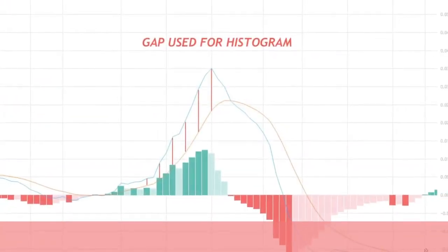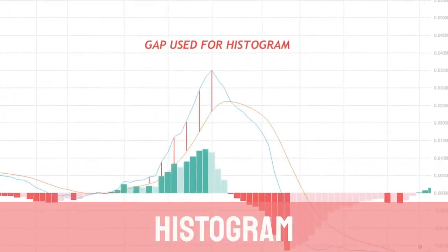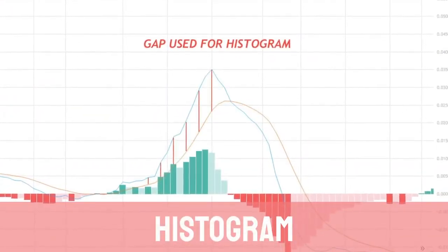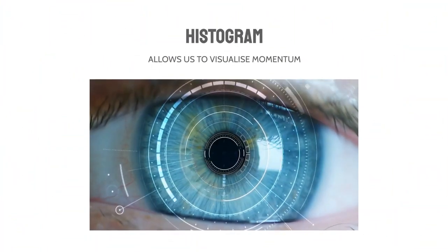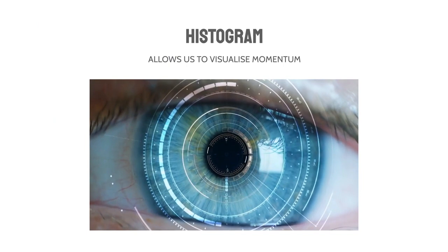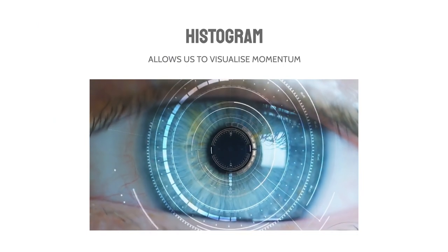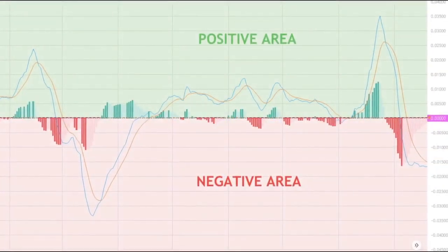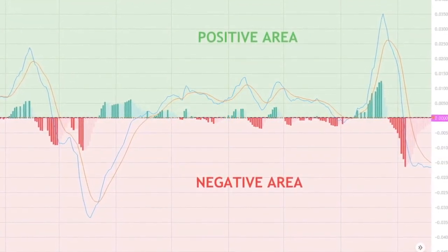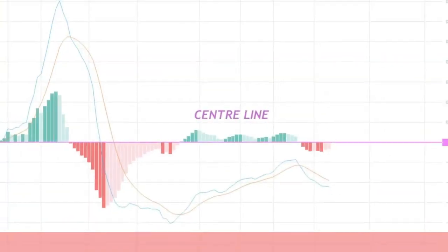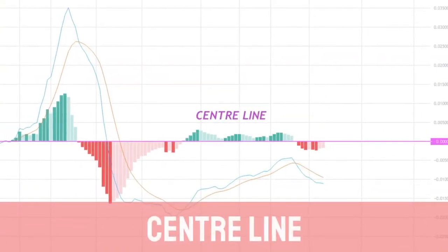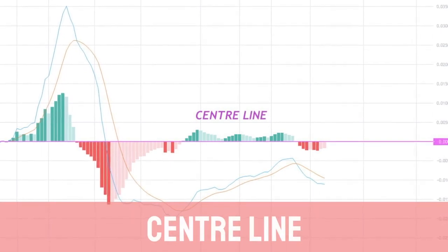The use of the MACD signal line alongside the MACD itself allows for the identification of bullish and bearish trends. The gap between the signal line and the MACD itself is what is used for the creation of the histogram. The histogram of the MACD allows us to view swings of momentum. When trading with the MACD, there is a positive and a negative area. The centre line of the MACD allows us to view whether we are in a positive or a negative area.